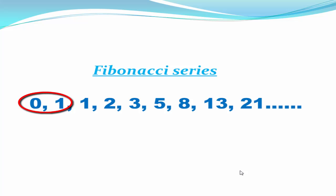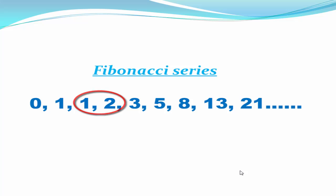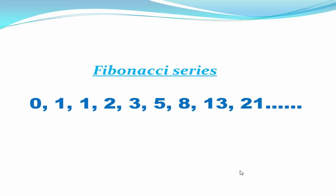We need to add these two numbers to get the next number. So 0 plus 1 is equal to 1, 1 plus 1 is 2, 1 plus 2 is 3, 2 plus 3 is 5, and this procedure is continuous. To get the next number, we add the previous two numbers.